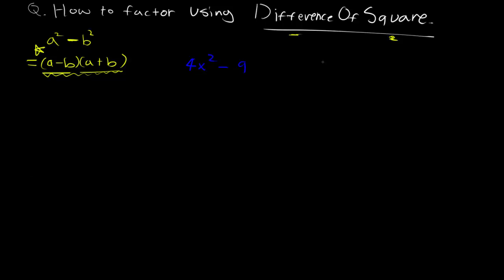Notice that 4 can be rewritten as 2 squared, right? And 9 is the same thing as saying 3 squared. So notice there's squares everywhere, which means we know that we have to use difference of squares.